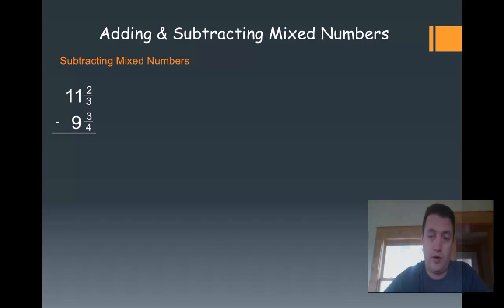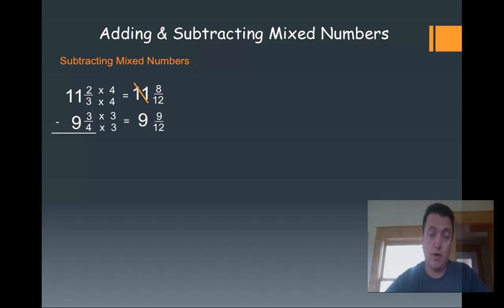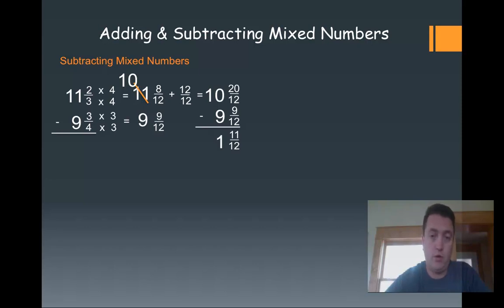Let's look at our next subtraction problem: 11 and 2 thirds minus 9 and 3 fourths. These aren't related, so I need to multiply to get a common denominator of 12. That gives me 11 and 8 twelfths minus 9 and 9 twelfths. Right away I recognize I cannot take 9 away from 8, so I'm going to borrow. 11 becomes 10, and I add 12 twelfths to get 20 twelfths. Now 20 take away 9 is 11 twelfths, and 10 take away 9 is 1. So my final answer is 1 and 11 twelfths. Since 11 is a prime number, it can't go any lower.